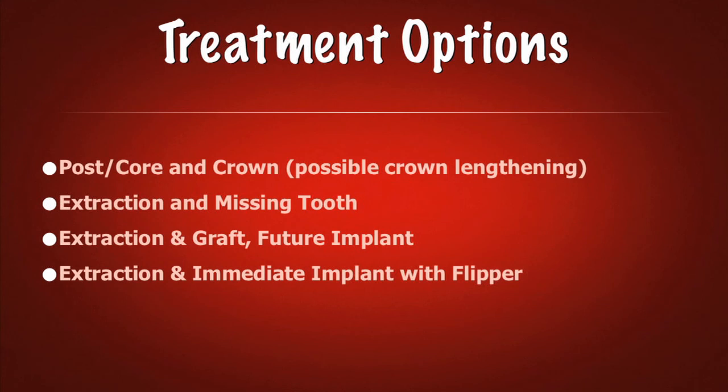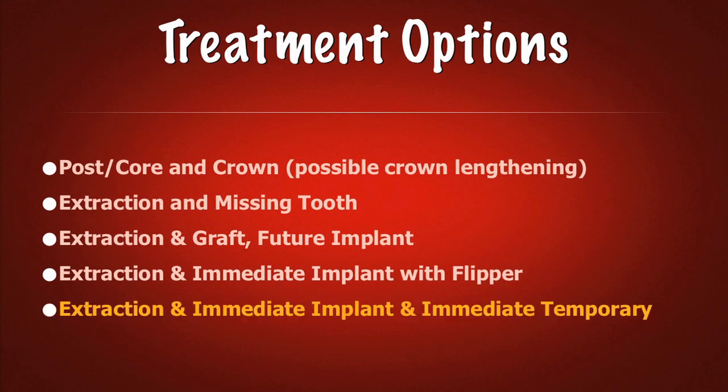So one of the options we have is to take out the tooth, place the implant immediately, and then do some type of temporization through a flipper or some type of Essex retainer with a denture tooth in there. The issue here is most patients aren't interested in wearing a removable device, and the flipper or the Essex retainer doesn't do anything to help with soft tissue development in the anterior.